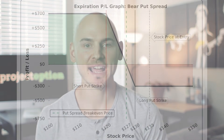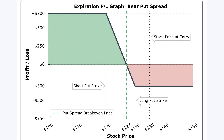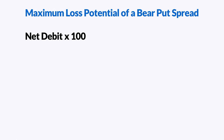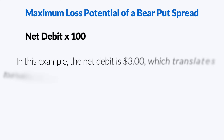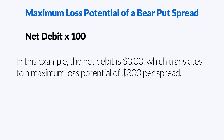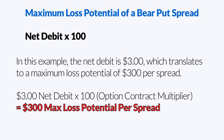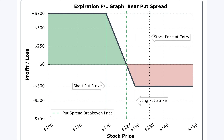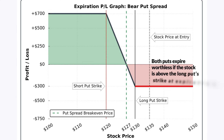Let's take a look at the expiration profit and loss graph for this particular bear put spread position, which shows profit and loss figures based on various stock prices at the time of expiration. The maximum loss potential of a bear put spread is the net debit paid times 100. In this example, since I paid $3 for the position overall, the maximum loss potential is $300. The maximum loss potential is realized if the stock price is at or above the long put strike price at expiration, because both put options in the spread will expire worthless and the spread's value at expiration will be $0.